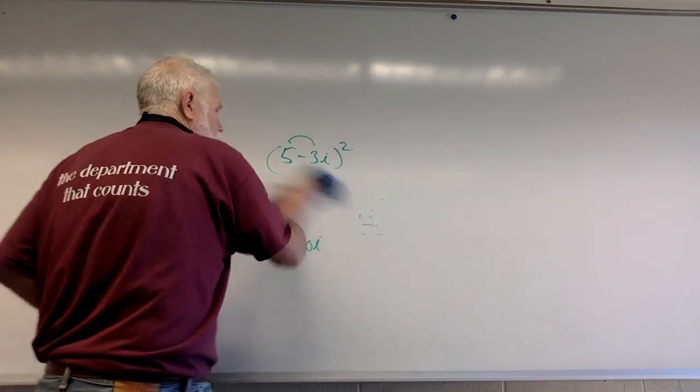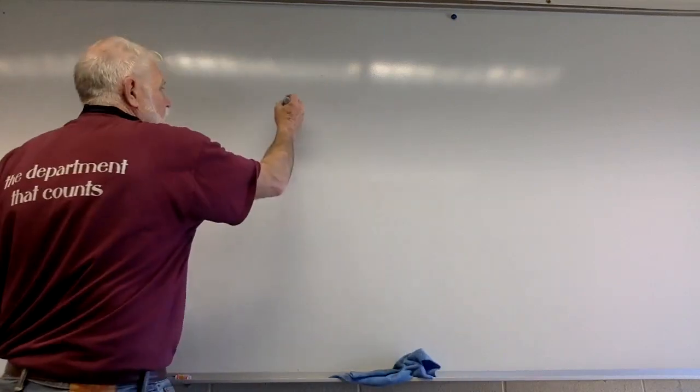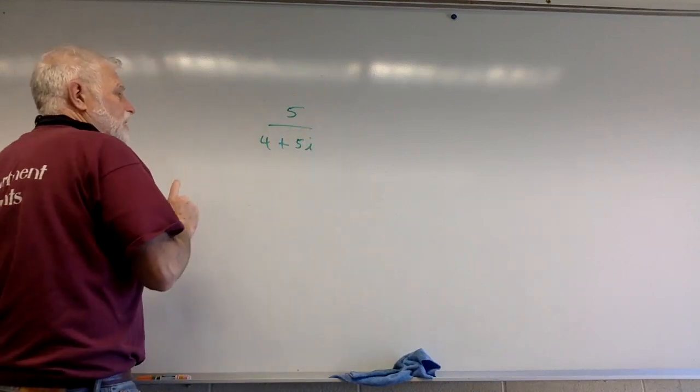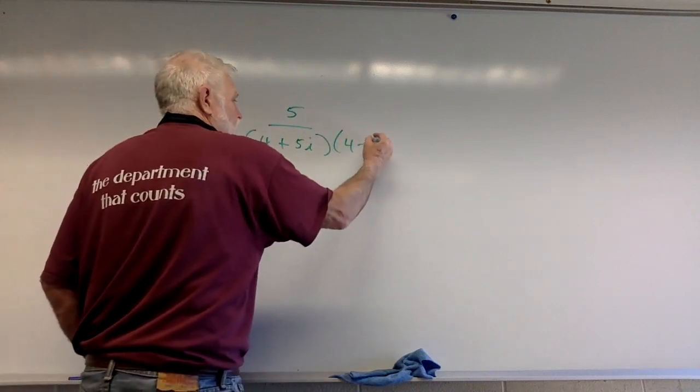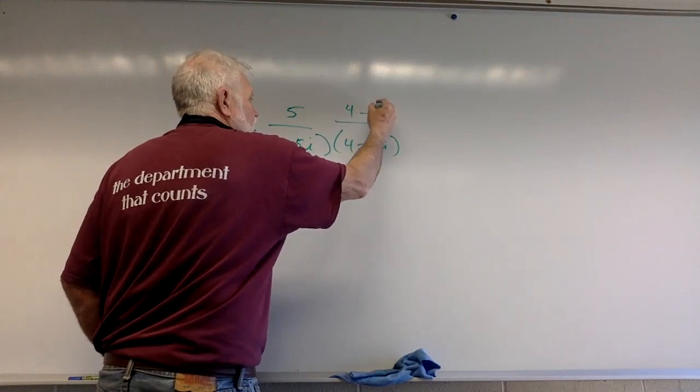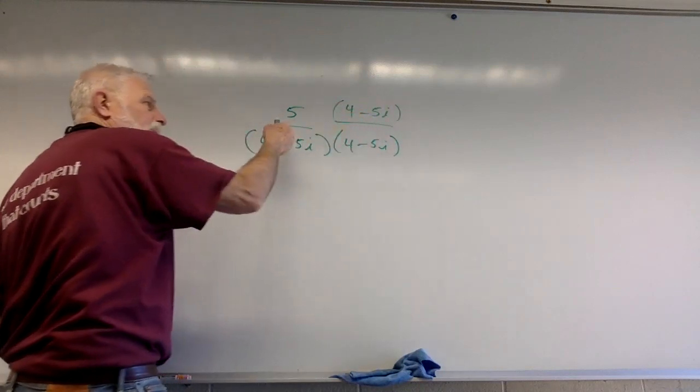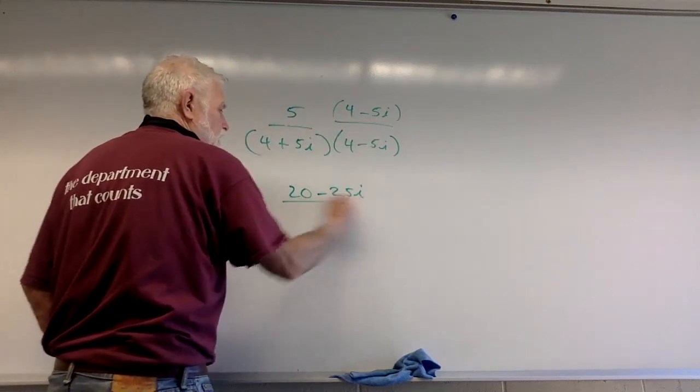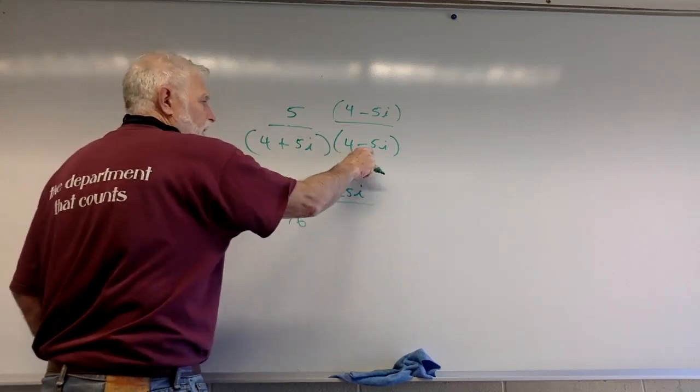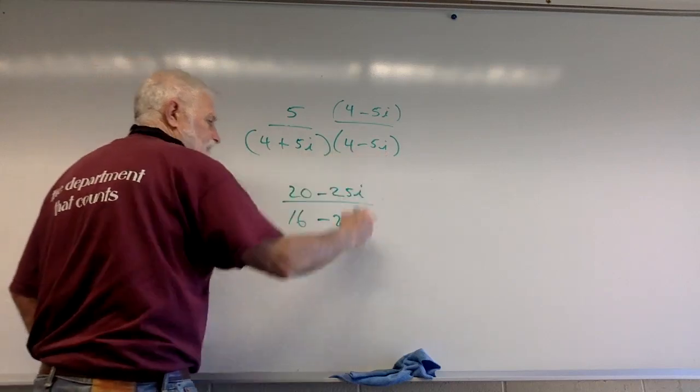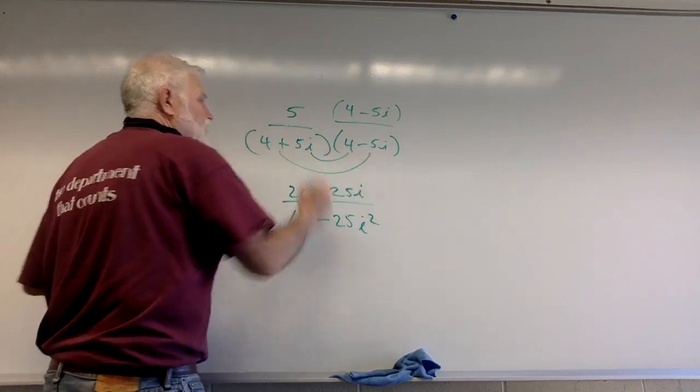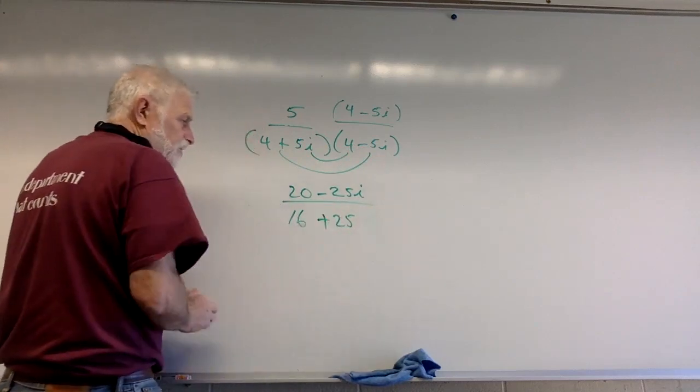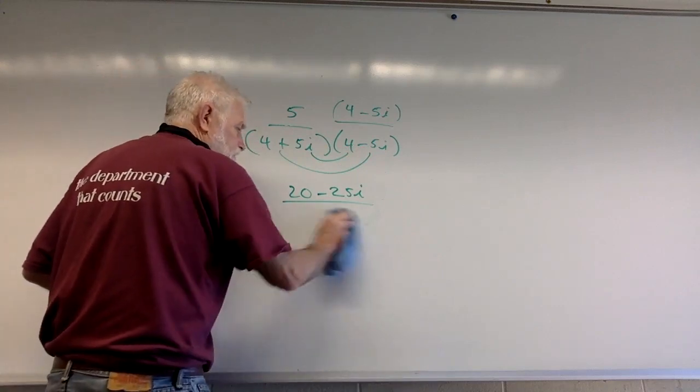We practiced conjugating, 5 over (4+5i). What's the conjugate? You're pausing. 4+5i becomes 4-5i. I haven't changed the size of the fraction because I'm multiplying by one. 5 times 4 is 20, 5 times -5i is -25i. 4 times 4 is 16, positive 5 times negative 5 is -25, i times i is i². Middle terms cancel. i² makes this positive 25. There's your answer: (20-25i)/41, because 16+25 is 41.